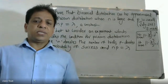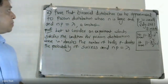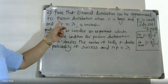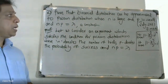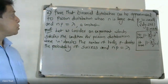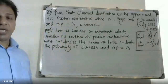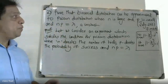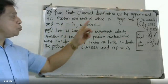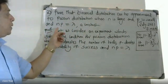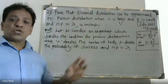Good morning students. We will show that the binomial distribution can be approximated to the Poisson distribution when n is large and p is small, and np is equal to lambda, where lambda is a constant.